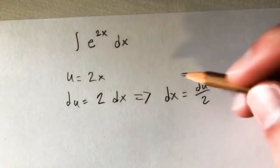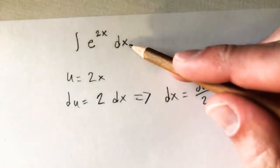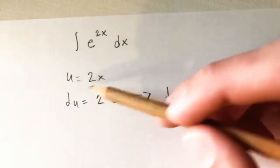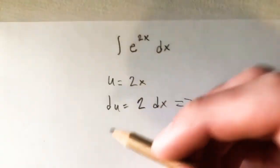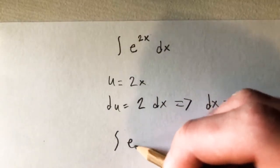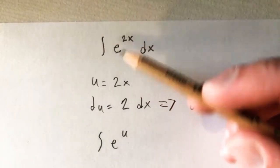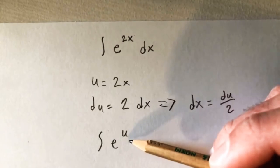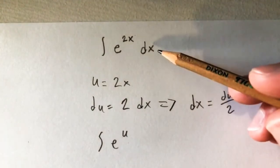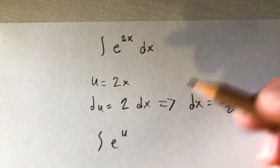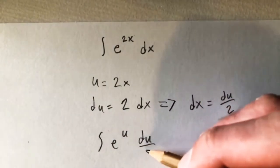So now we can substitute du over 2 in for dx, and then we can substitute u in for 2x. So that is going to give us the integral of e to the u. By putting our u in for 2x is going to give us e to the u, and then putting du over 2 in for dx is going to give us a du over 2 here.